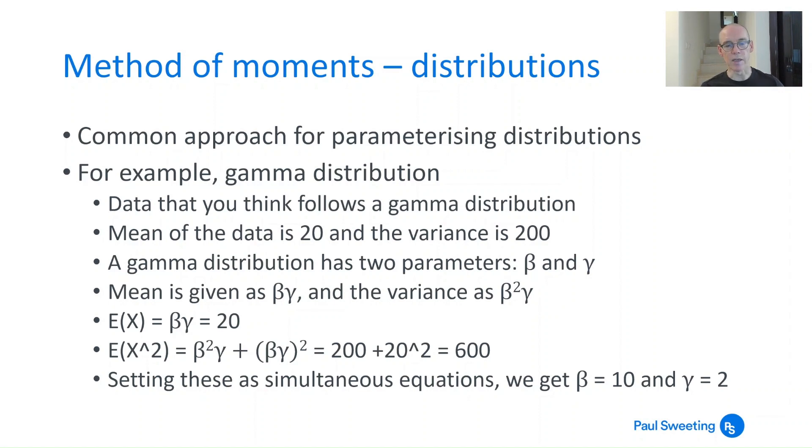You can set these up as simultaneous equations. You've got two unknowns, two equations, and if you do a bit of playing around, you can get beta equals 10 and gamma equals 2. That's the method of moments.